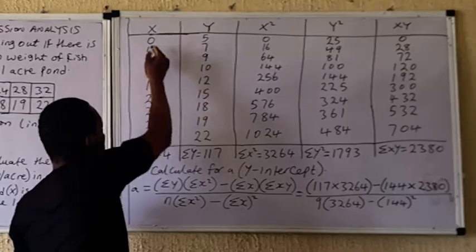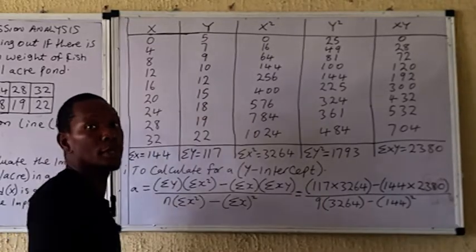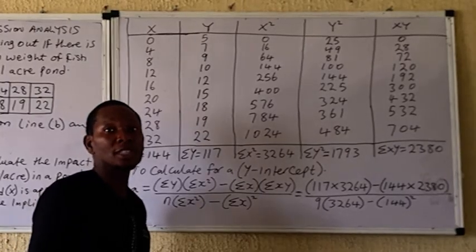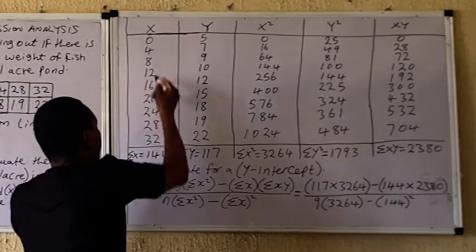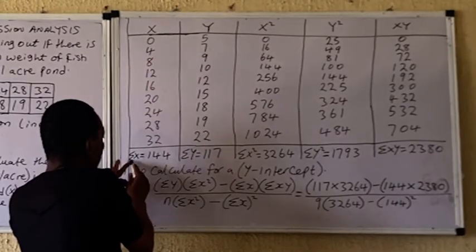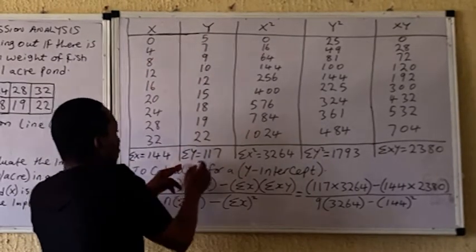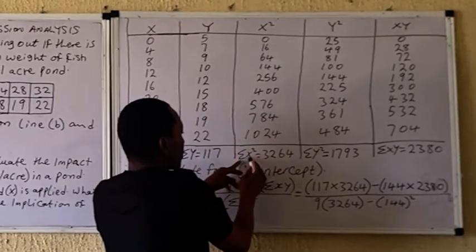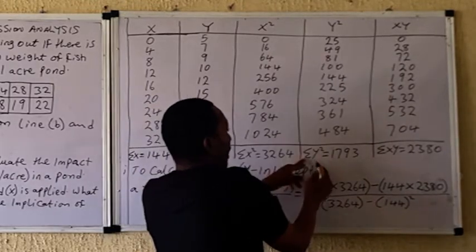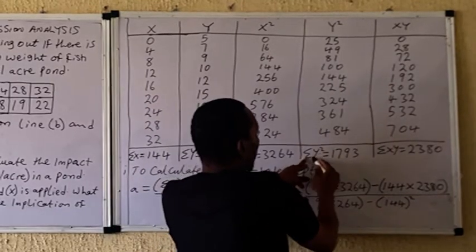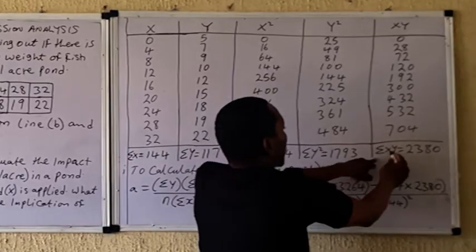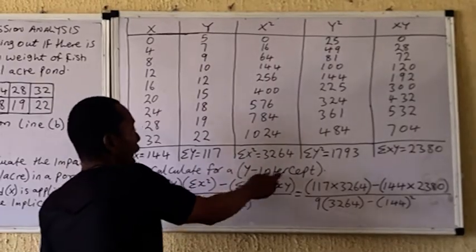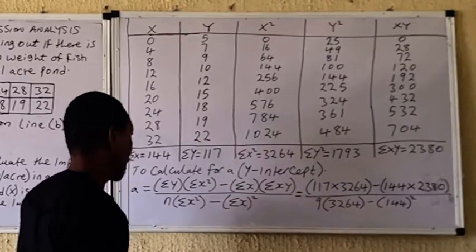Now look for the sums. Please take note — if you have not watched my previous video on how to calculate regression analysis, please do that before watching this video. Add all x values together to get the sum of x, add all y values to get the sum of y, add all x-squared values to get the sum of x-squared, and get the sum of xy.